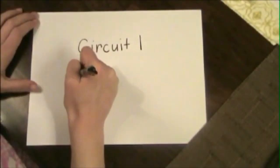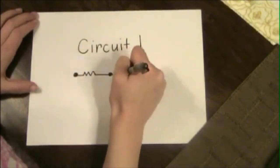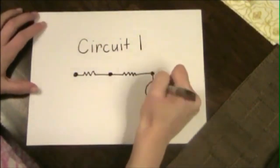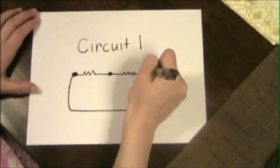This is the first circuit we are going to explore. It's pretty simple. We have two resistors in series and we're going to look at how the water level changes across the resistors.